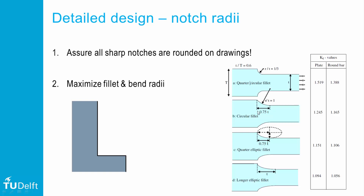The lower two cases illustrate that a fillet created with an ellipse reduces stress concentrations further. In practice, a sharp corner illustrated here on the left can be made smooth by adding a slope at 45 degrees. If we then add another slope at half that angle, starting halfway from the first slope and repeating that several times, one automatically creates a smooth transition with a low stress concentration factor.